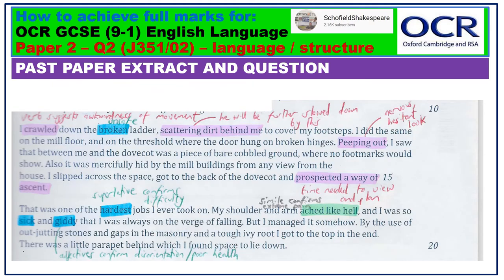Here, I've looked at language. I'm quite interested in the verbs used by the writer to emphasise the difficulties and dangers of the escape: 'crawled,' 'peeping,' 'prospected.' I'm also interested in the adjectives — the superlative 'hardest' — and the fact that he was so sick and giddy that he nearly fell. Of course, with any language question, as soon as you see a simile, a metaphor, or an example of personification, you must leap upon it. Here, his shoulder and arm 'ached like hell.'